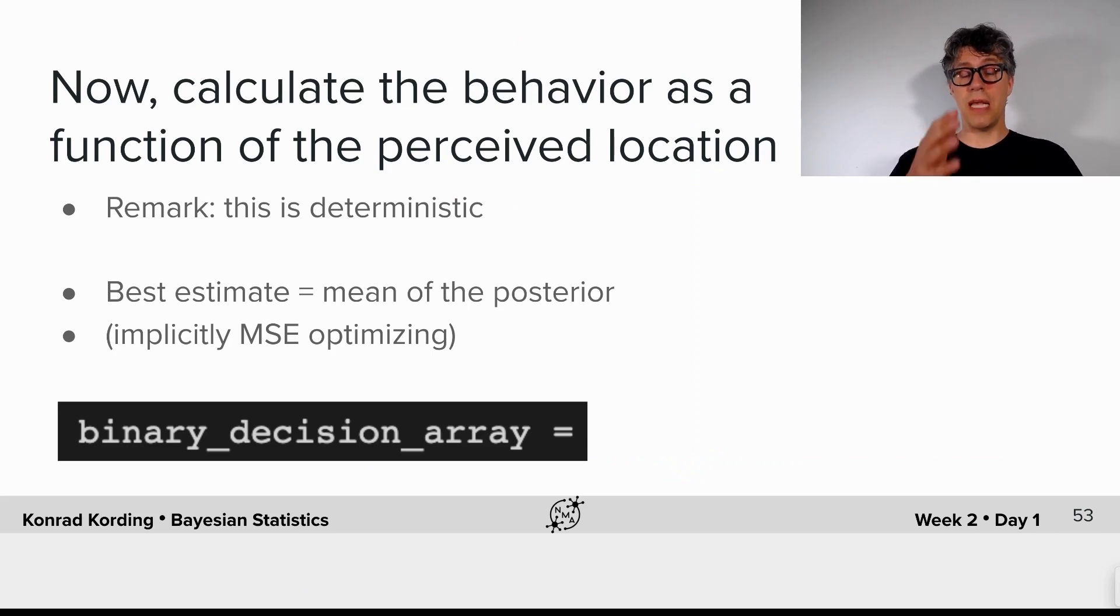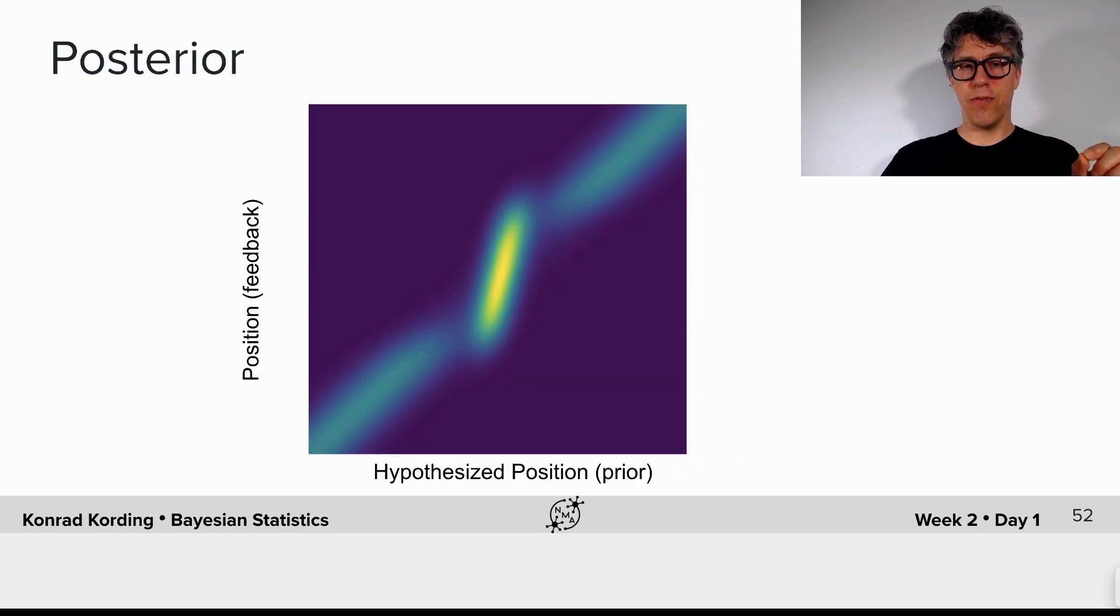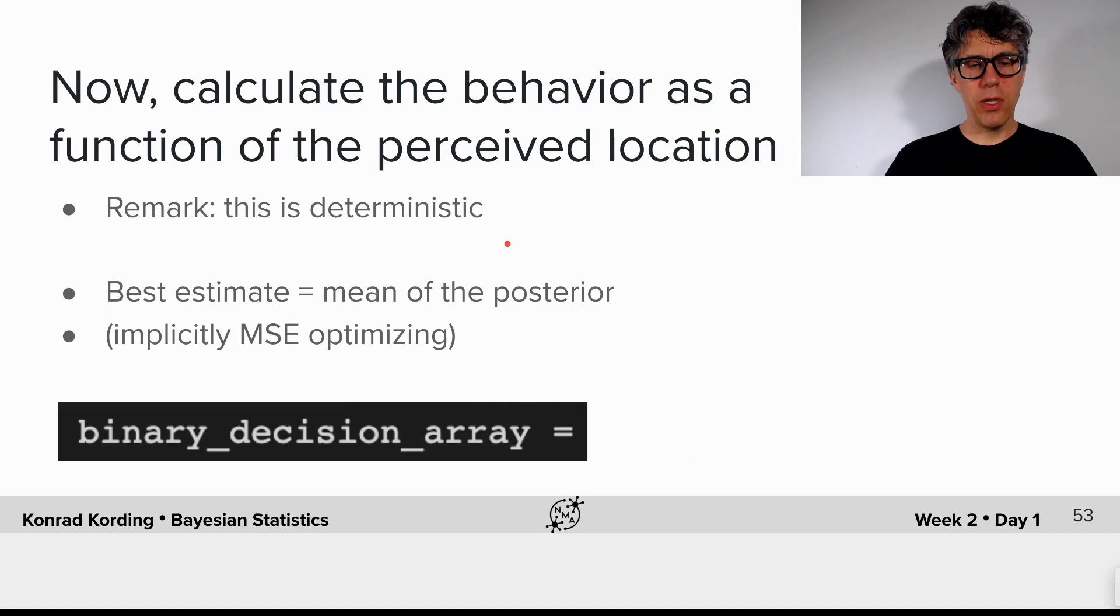Now, what we want to do is estimate for each possible x tilde, for each possible perceived encoded stimulus location here, what's the best estimate? So you can say, well, what should we choose? Well, a simple one is the mean of the posterior. Now implicitly, it also means that this model would be optimizing for a minimal mean squared error.